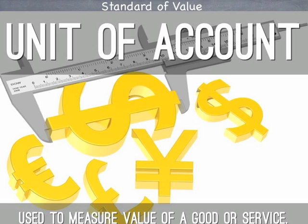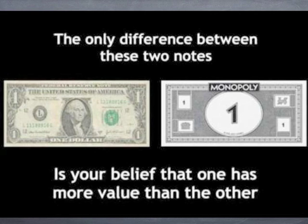To be a good standard of value, or unit of account, money must be useful for quoting prices. To accomplish this, money must be familiar, divisible, and accepted.